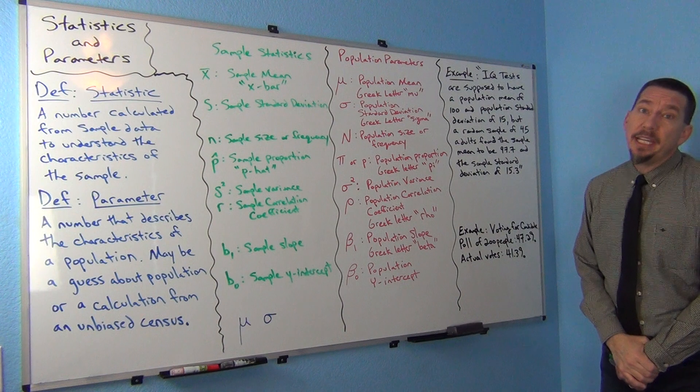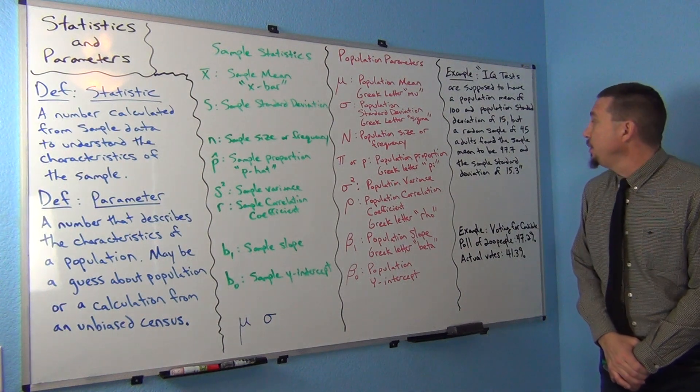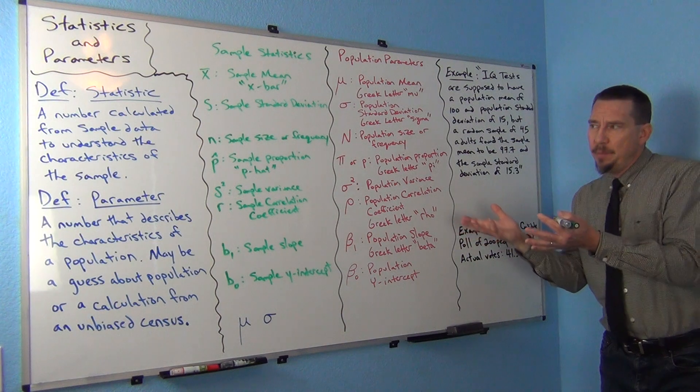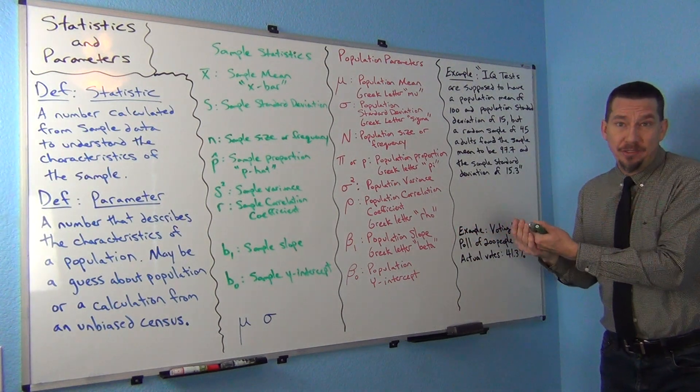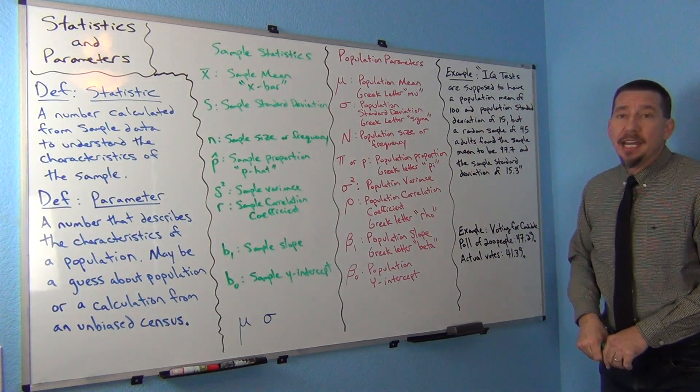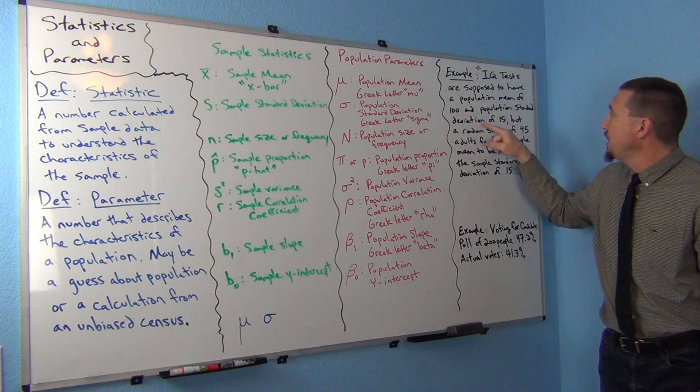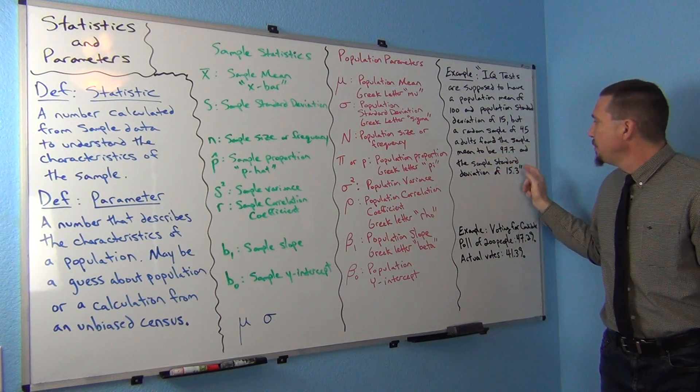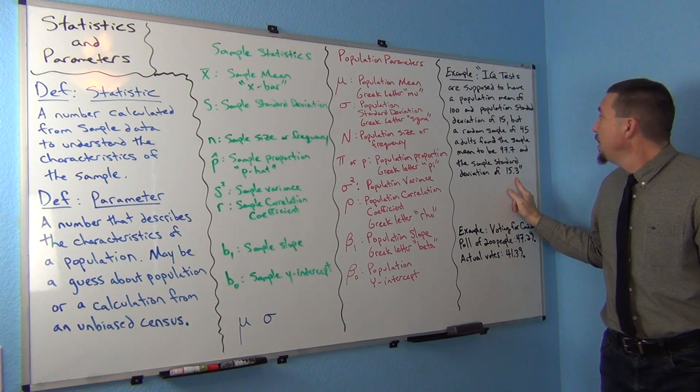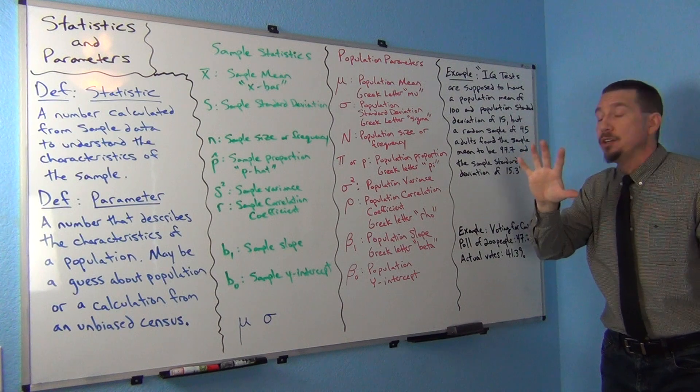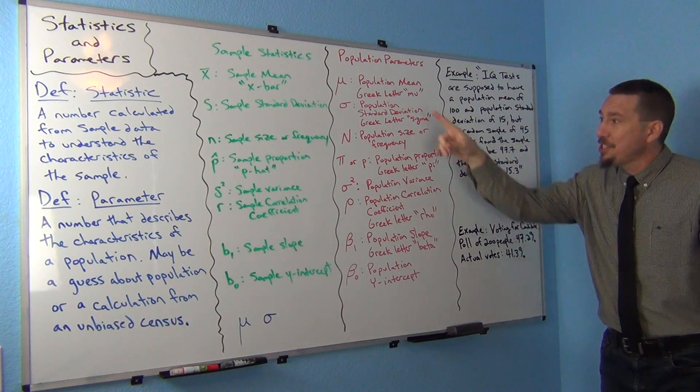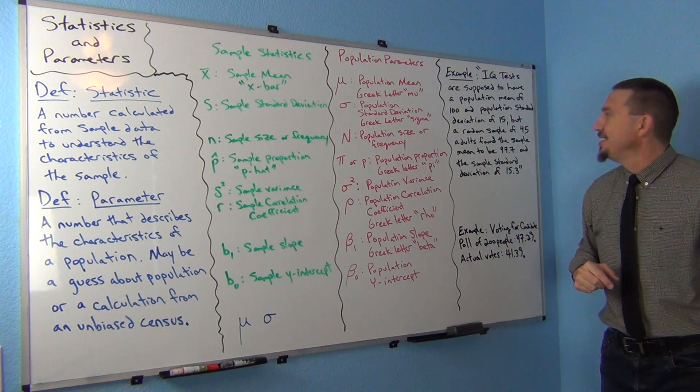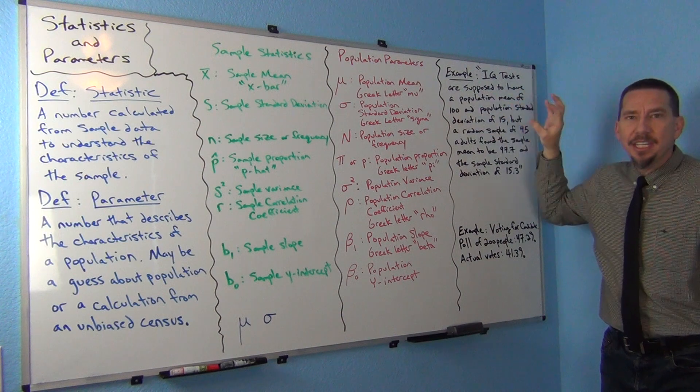Here's a good example. A lot of times you'll read an article, especially when we get to hypotheses, where somebody has said something about populations but they're using sample data to figure out if that population guess is right. This example says IQ tests are supposed to have a population mean of 100 and a population standard deviation of 15. But a random sample of 45 adults found that the sample mean was 97.7 and the sample standard deviation was 15.3. In this problem, we actually have five numbers that are listed, and our goal is to see which of these letters goes with which number.